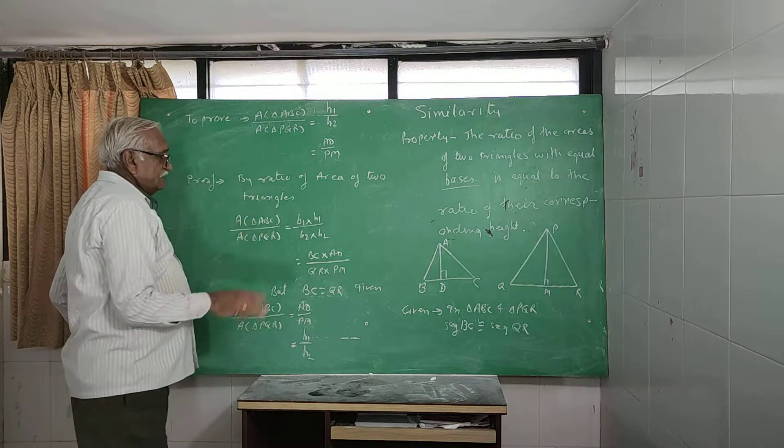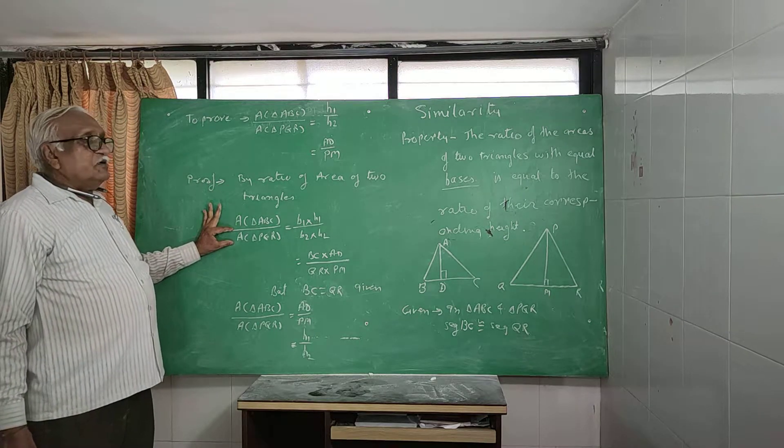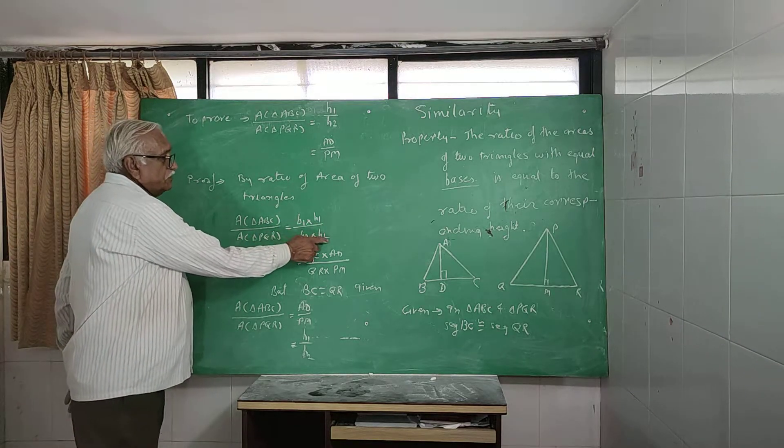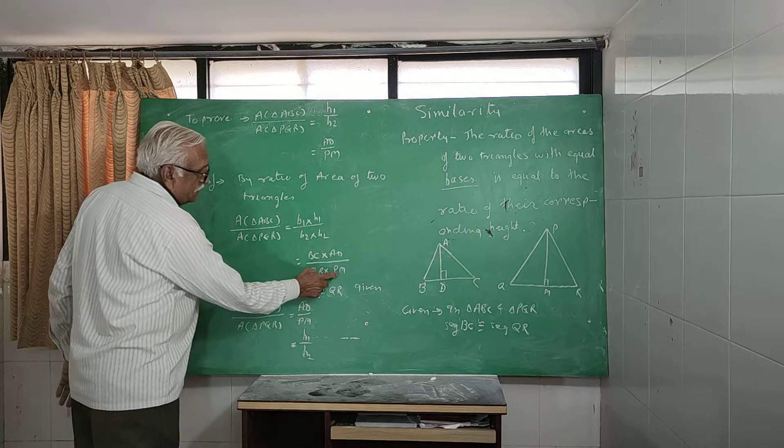Now prove by ratio of area of two triangles: area triangle ABC upon area triangle PQR equal to B1 into H1 upon B2 into H2, that is BC into AD upon QR into PM.